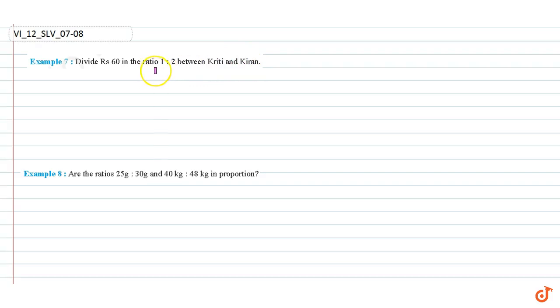In this video we are going to solve examples 7 and 8. Example 7: Divide 60 rupees in the ratio 1 is to 2 between Krithi and Kiran.